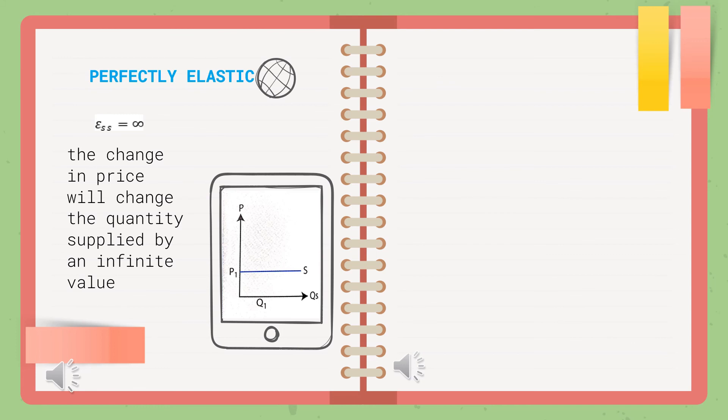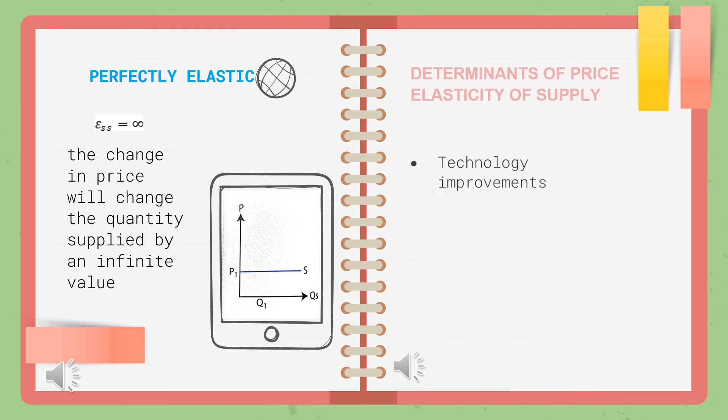Moving on to the determinants of Price Elasticity of Supply. The first is technology improvements. If a factory buys newer and more advanced machines, they can produce their products at a much faster rate. Hence, the quantity supplied will be more elastic.